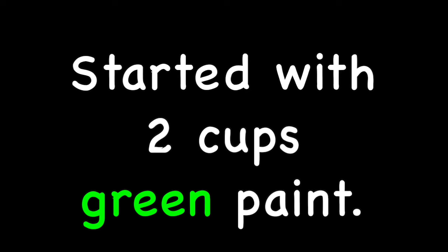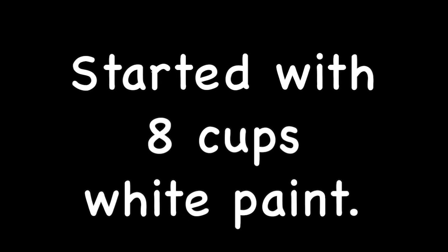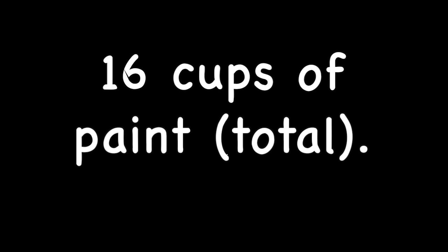The painter started with 2 cups of green paint. Since there are 16 cups in 1 gallon, there are 8 cups in a half gallon, so the painter started with 8 cups of white paint. Adding everything up: 6 cups of blue plus 2 cups of green plus 8 cups of white equals 16 cups total for the first batch.